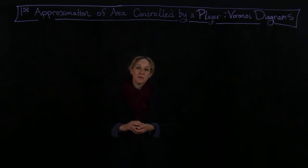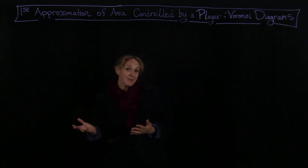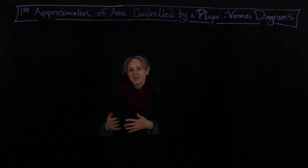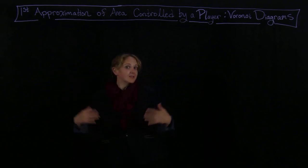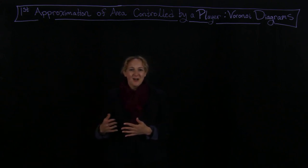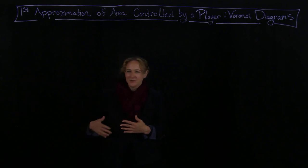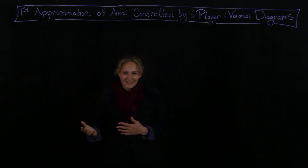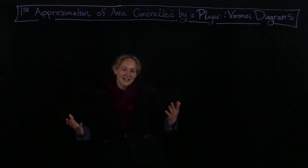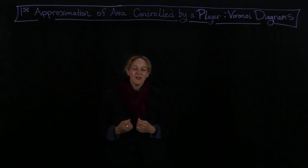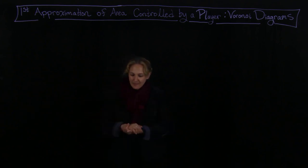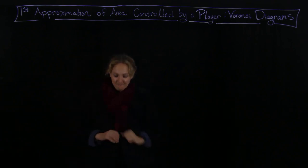Welcome. In this lecture, I want to focus in on a particular mathematical object that not only shows up early on and fundamentally when we're talking about the areas controlled by players — there are much more sophisticated notions now, but this is a nice first approximation. I've seen it show up in everything from voting districts to distribution of hospitals. So it's a very important concept, but also very fundamental in how one starts to visualize soccer. It's going to be called the Voronoi Diagram.